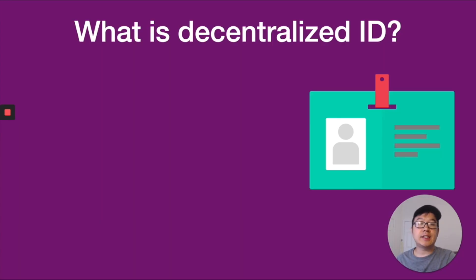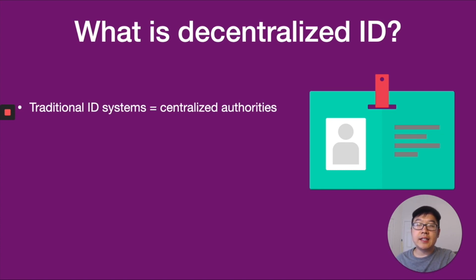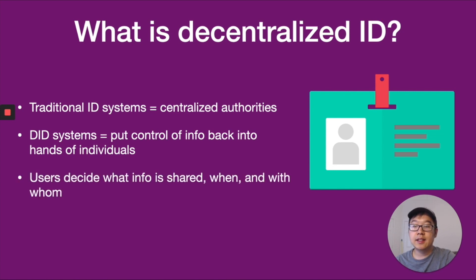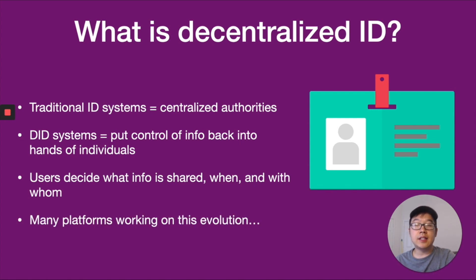So first of all, what is decentralized identity? With traditional ID systems, you have to go through centralized sources to confirm your identity and then get access to whatever it is you want — like a website, a product, a service. But decentralized ID systems, or DID, put control of your personal information back into your own hands. You are the one to decide, allow, and manage when your info is shared, what, when, and with whom. There are already several platforms working on this next step in our identity infrastructure on the internet.